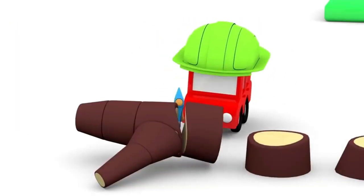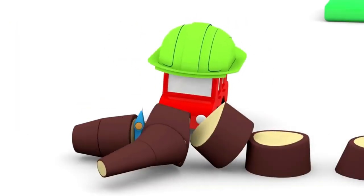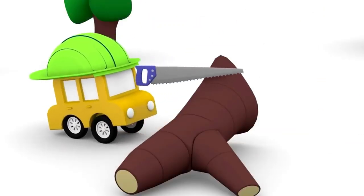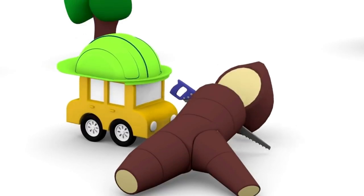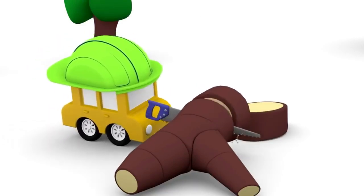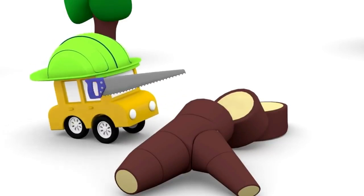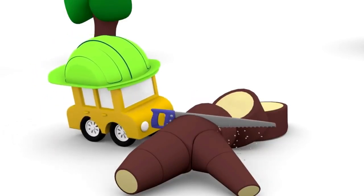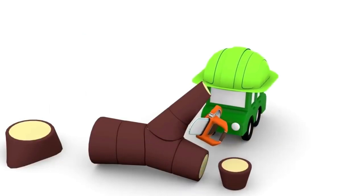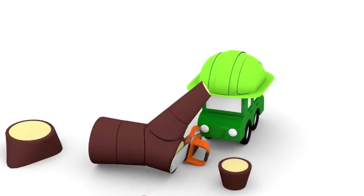The red car uses his axe to chop his tree into pieces. And the yellow car uses his saw to cut his tree slowly. But the green car is fastest with his chainsaw, of course.